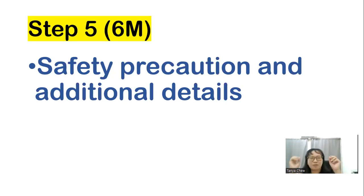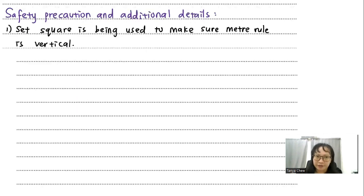Step 5, which is the hardest part of all, and they give you 6 marks for that. So I'm going to write down my safety precaution as well as additional details. This is not just details that you think that is detailed. For example, if you think that the experiment should be repeated three times and you find the average, that is not being called additional details. Because every experimenter knows that they should have repeated the experiment and find the average so that the results are more reliable. That cannot be considered as additional details.